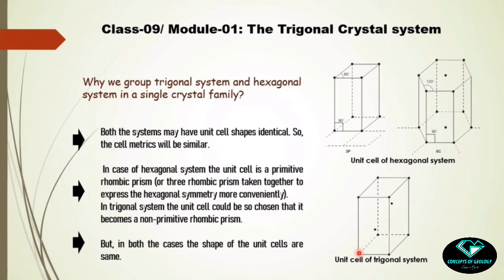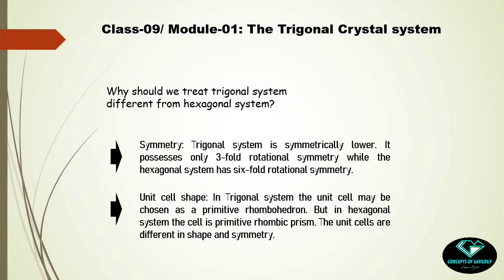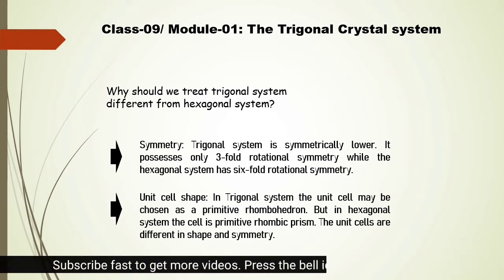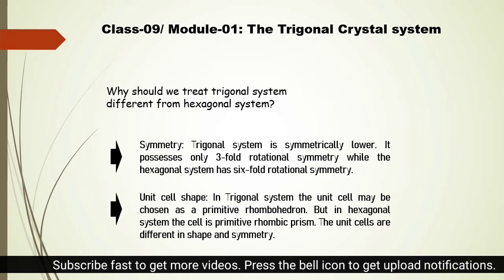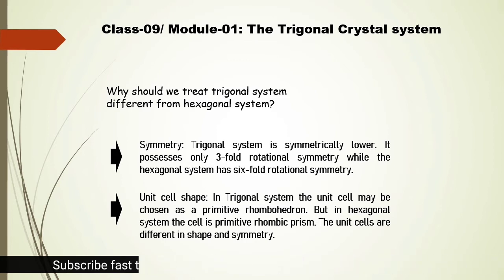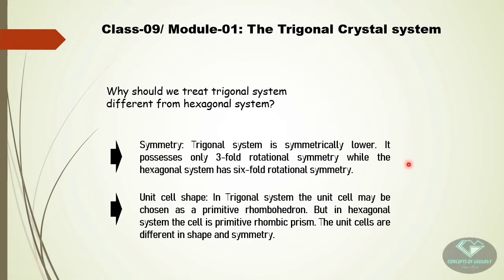They are in the same crystal family because the unit cells of both systems may be so chosen that their external appearance — the rhombic prism shape — is similar; in one case primitive, in the other non-primitive. However, we treat the trigonal system differently from the hexagonal system because of symmetry. In the trigonal system the symmetry is a threefold rotational symmetry, while in the hexagonal system we have a sixfold rotational symmetry — so trigonal is symmetrically lower.